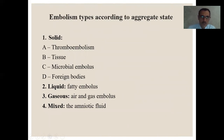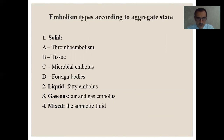Embolism types according to aggregated state. First, solid: thromboembolism, tissue embolism, microbial embolus, and foreign bodies. Second, liquid: fatty embolus. Third, gaseous — also divided into air and gas embolus — and mixed, for example amniotic fluid.